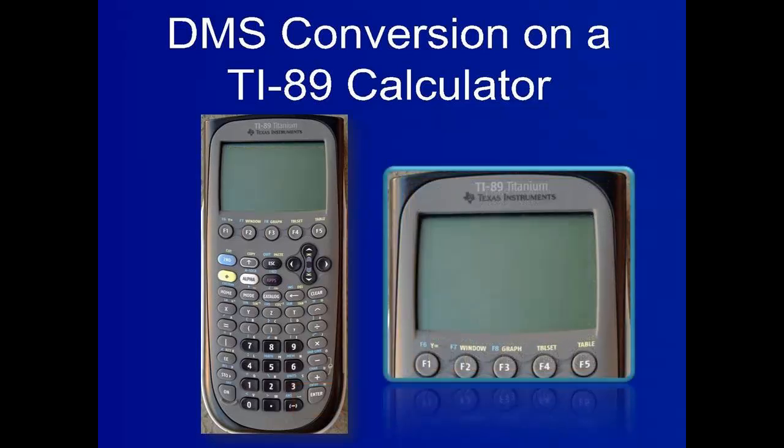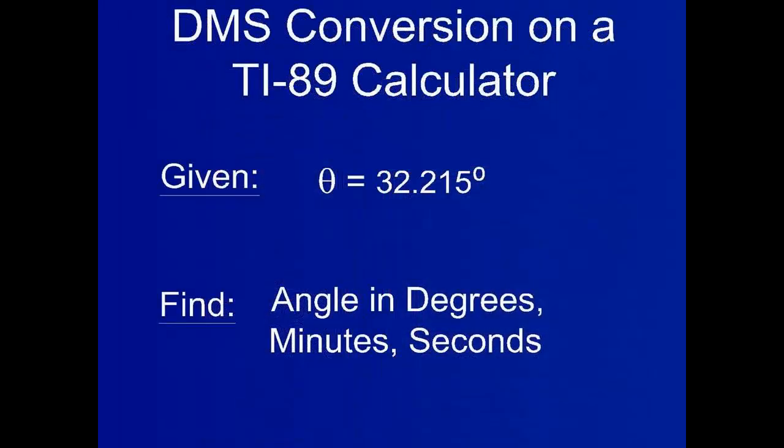Now that the calculator is in degree mode, it is possible to perform DMS conversions on a TI-89 calculator. Given is the angle 32.215 degrees; the objective is to find the angle in degrees, minutes, and seconds format, otherwise known as DMS form.